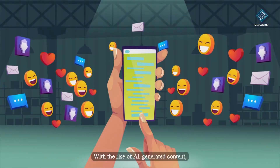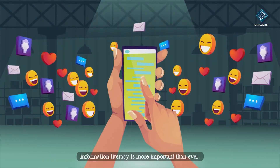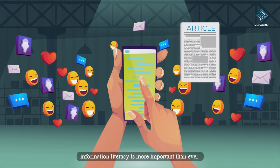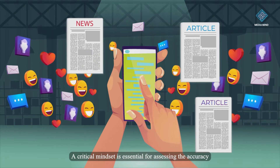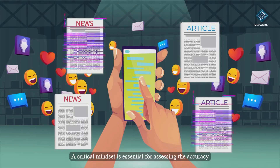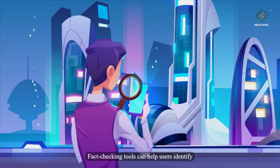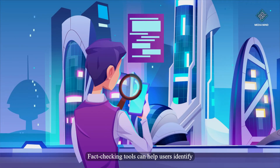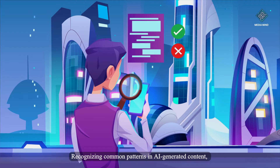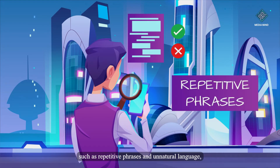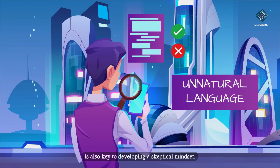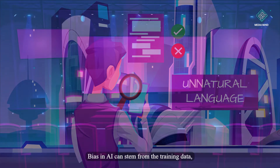With the rise of AI-generated content, information literacy is more important than ever. A critical mindset is essential for assessing the accuracy and credibility of online content. Fact-checking tools can help users identify false or misleading information. Recognizing common patterns in AI-generated content, such as repetitive phrases and unnatural language, is also key to developing a skeptical mindset.